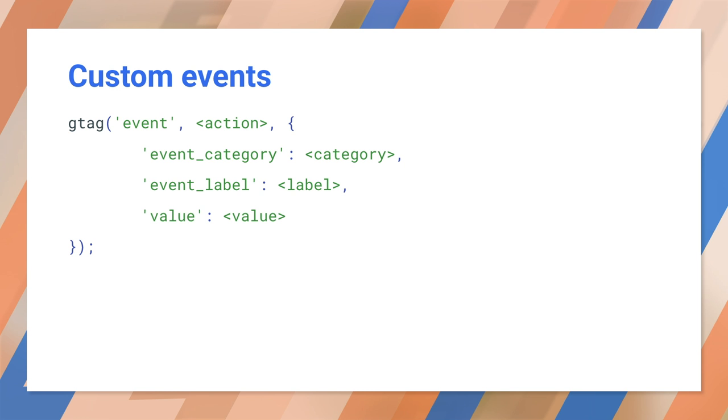Values associated with the event are added as parameters. These values represent the event category, event label, and a value. All of these entries are yours to define. These custom events allow us to dig into user interactions with our site. You can track aggregate events and event paths.